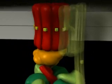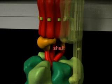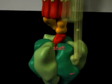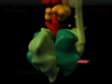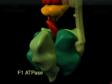The rotational energy is transmitted via a shaft attached to the rotor that penetrates deep into the center of the characteristic lollipop head, the F1 ATPase, which catalyzes the formation of ATP.